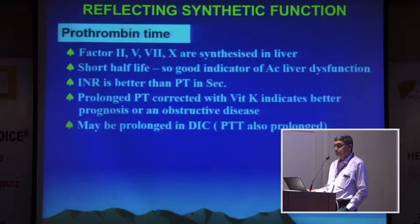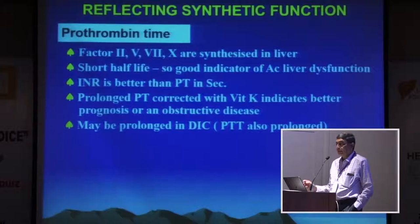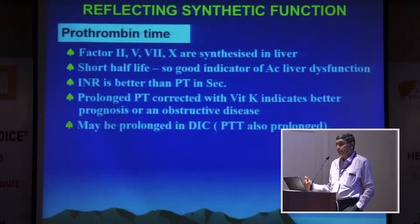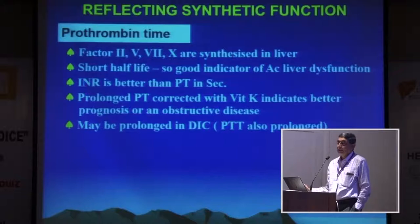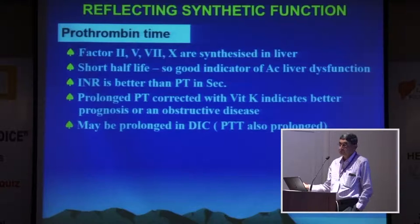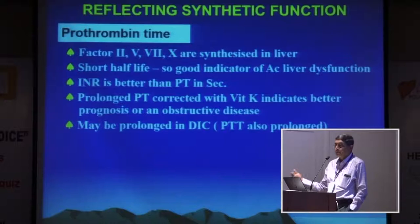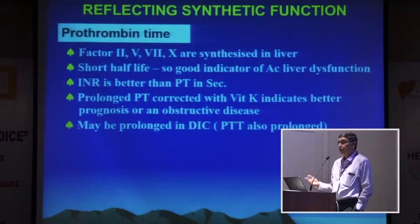Tests reflecting synthetic function: prothrombin time. The clotting factors have a short half-life — within 24 hours — so they are a good indicator of acute liver dysfunction. Today we use the term INR rather than prothrombin time. A prolonged prothrombin time that gets corrected with vitamin K indicates a better prognosis, meaning the hepatocytes can extract vitamin K and synthesize clotting factors, or it was an obstructive disease with impaired vitamin K absorption. It may also be prolonged in DIC, in which case PTT will also be prolonged. In primary hepatic disease, PTT will be normal.